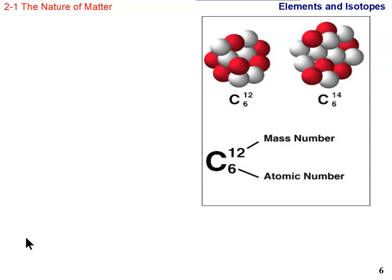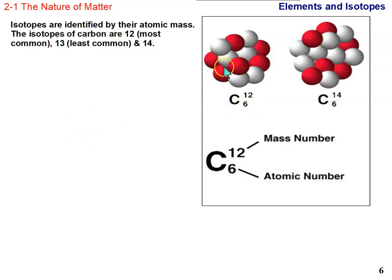Carbon has different isotopes. Isotopes are identified by their atomic mass. Notice that the atomic number here between these two isotopes is the same—six protons. That's what makes carbon carbon. If you change the number of protons, it's no longer carbon. What changes is the number of neutrons. There's carbon 12, which is the most abundant, carbon 13, which is the least common, and carbon 14, which is somewhere in between.